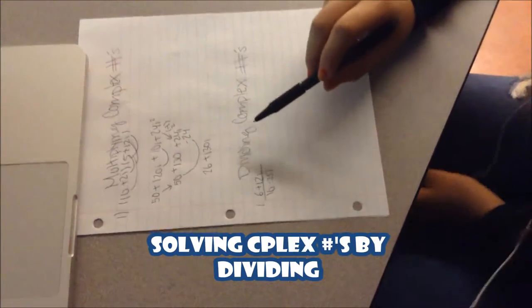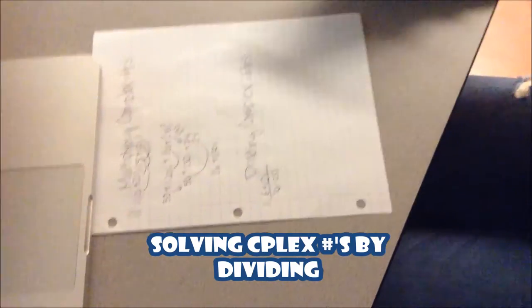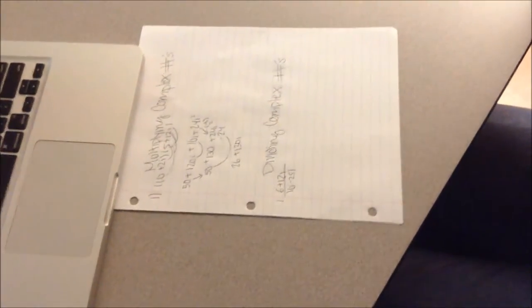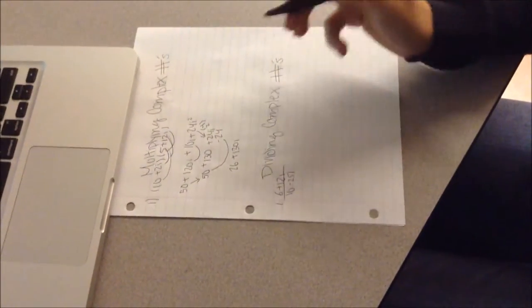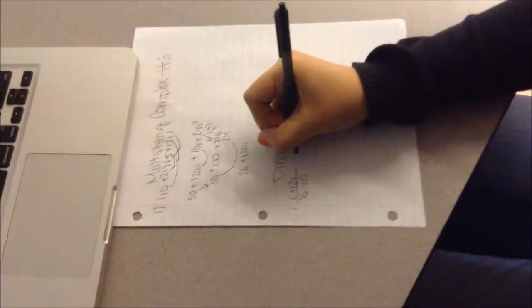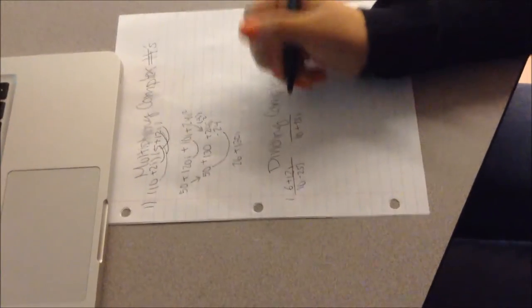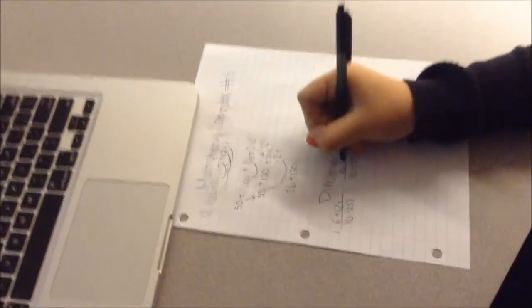Now I am going to show you how to solve a complex expression by dividing it. So for example here you have the complex numbers being divided. What you have to do is get the denominator. As you can see here, and you get the opposite of it, which is called... I don't know what it's called. But it's something.